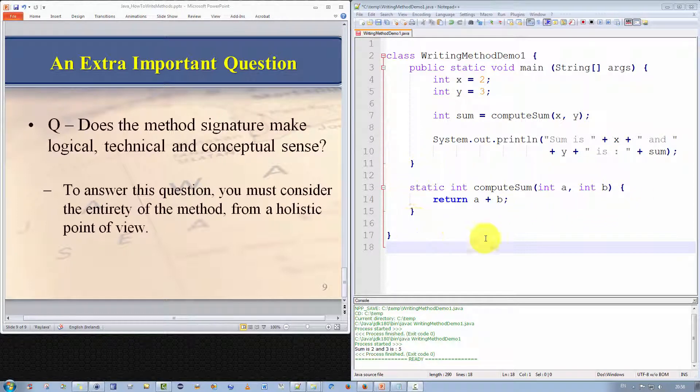To recall our method was a method to compute the sum of two integers and return the result. We received int a and int b and we computed the value and we returned the result as an integer. I pointed out that this method will work 99% of the time but most definitely not 100% of the time. I said the method was buggy.